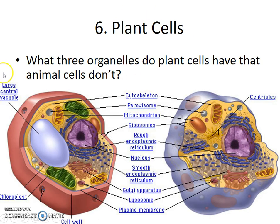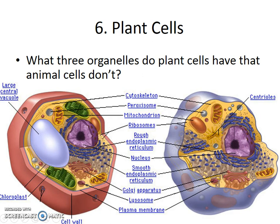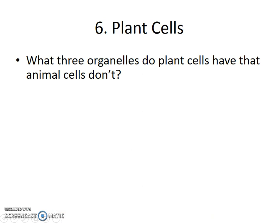Plant cells are actually pretty similar to animal cells. There are really only three parts of a plant cell that separate them from animal cells: vacuoles, chloroplasts, and cell walls. Since those are the three things that make plant cells unique and we're talking about plants, let's focus on them. What do those vacuoles, chloroplasts, and cell walls do?